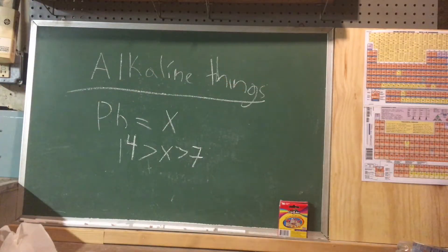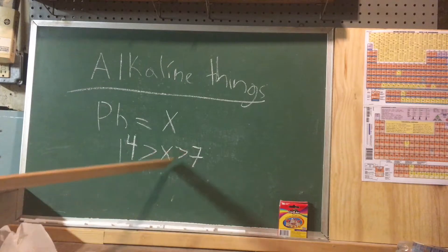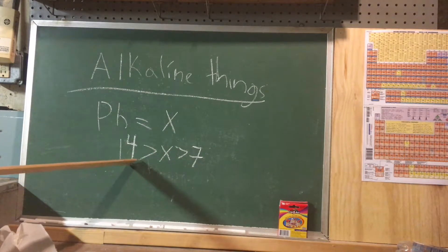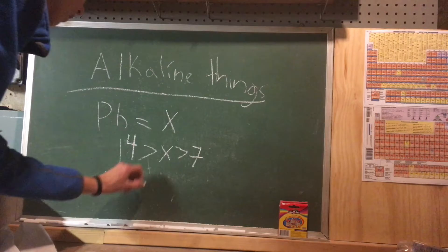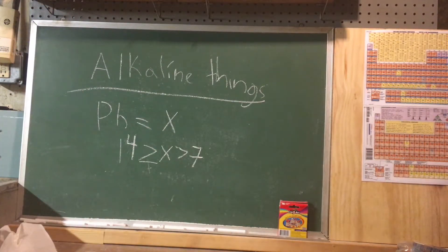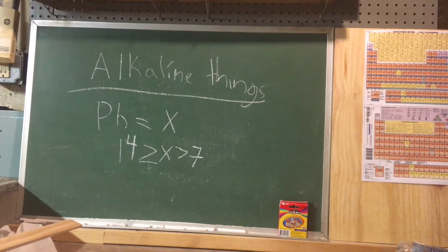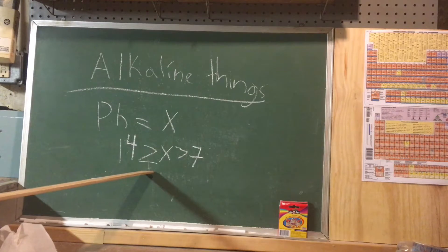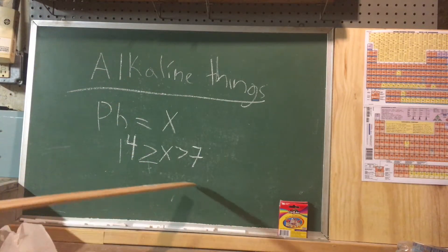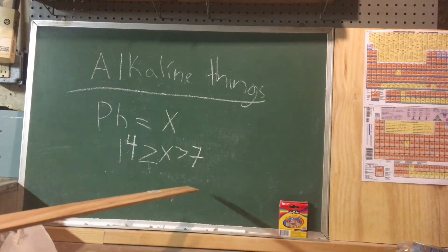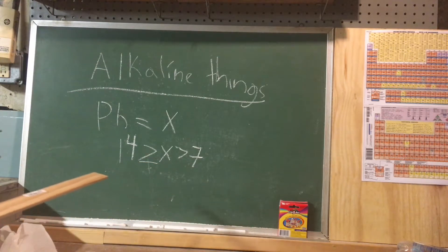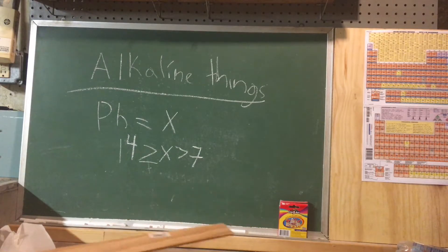In alkaline things, pH equals x. Actually when I wrote down basic things, it should also be greater than or equal to. In this case, it must be equal to or smaller than 14 and also be larger than seven but cannot be seven. Very sorry about that mistake. If you're taking notes, please fix that.